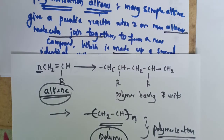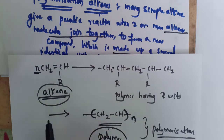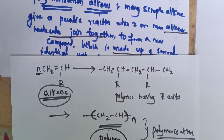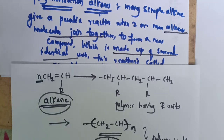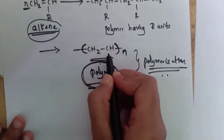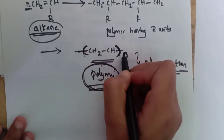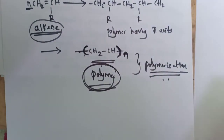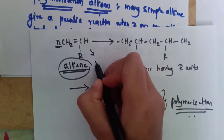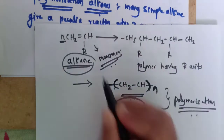When two or more alkene molecules join together, they form a new compound made up of several repeating identical units. This reaction is called polymerization. The product is called a polymer, represented as [CH2-CH]n in brackets with n outside, having n repeating units. The individual simpler units are called monomers.